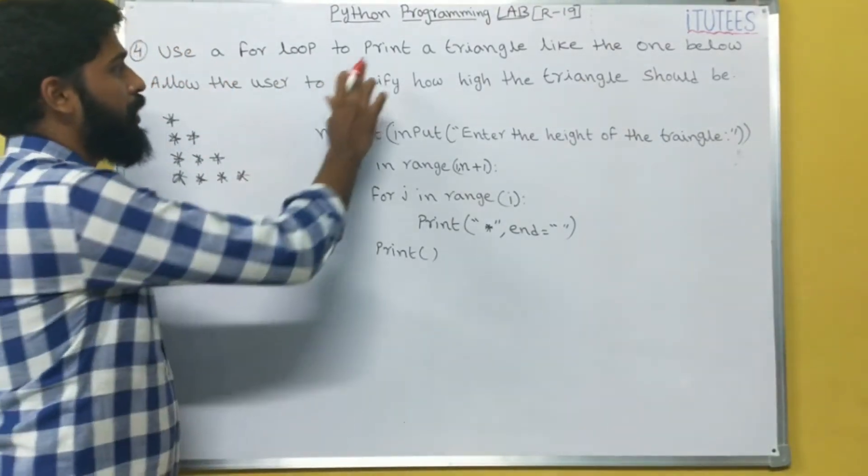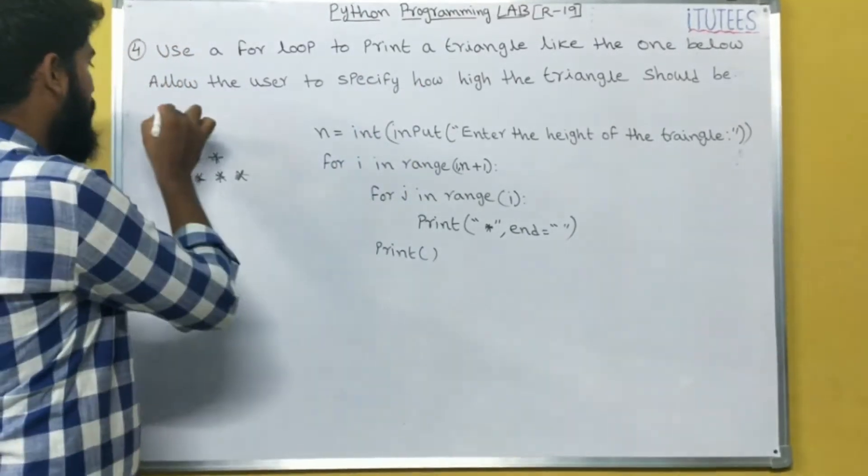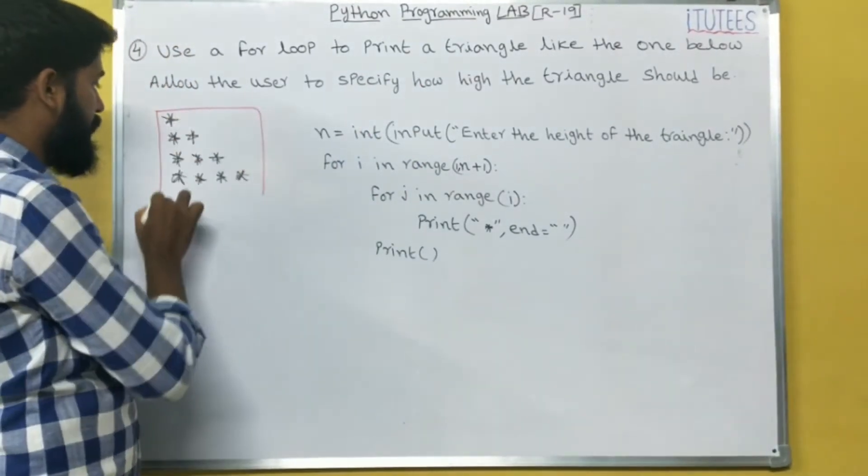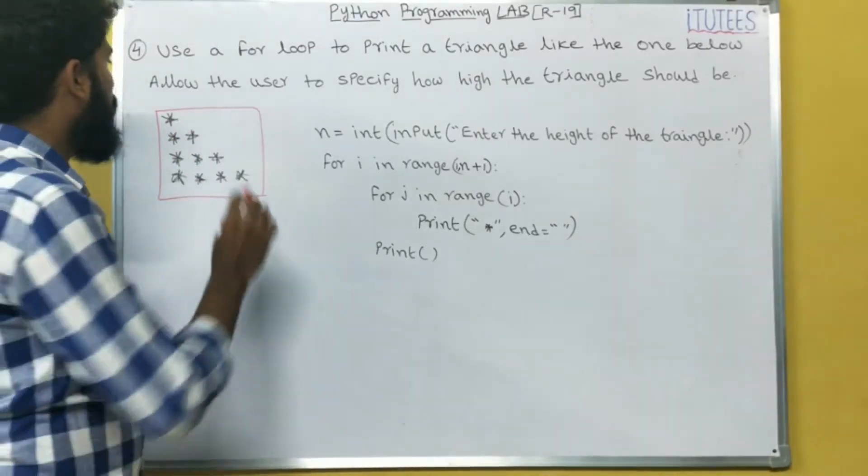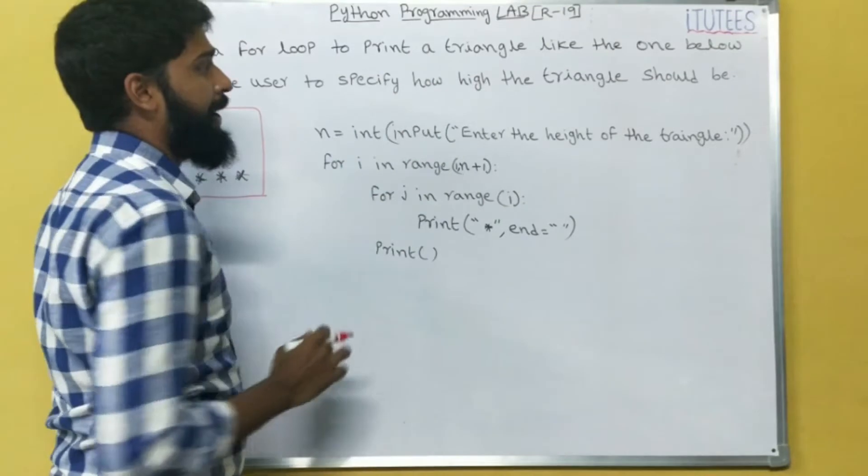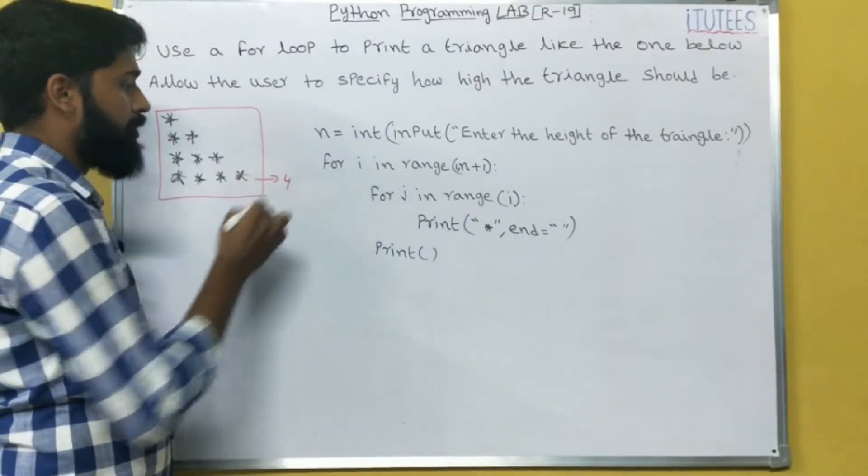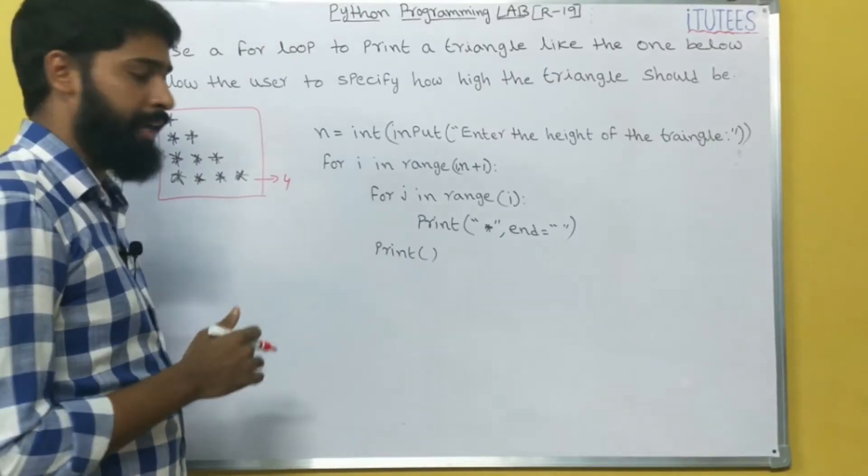Use a for loop to print a triangle like the one below. This is the triangle. Allow the user to specify how high the triangle should be. So that means in this case the height is 4, that means the user can give the height.